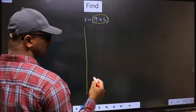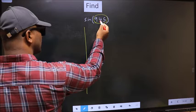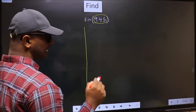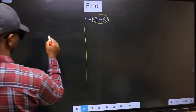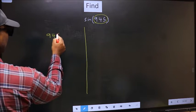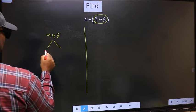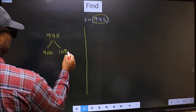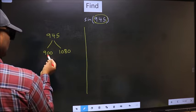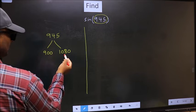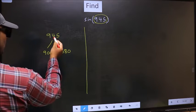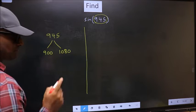Now you should check: 945 lies between which two multiples of 180? What I mean is, 945 lies between 900 and 1080. This is 180×5, and this is 180×6. In between these two, 945 lies.